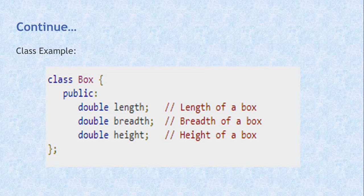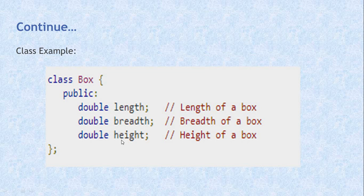Let's have an example. A class named 'Box' has an access specifier with public member variables: length, width, and height. However, this is only a semi-complete class. This class is not complete because it only has length, width, and height related data members but is missing functionality.